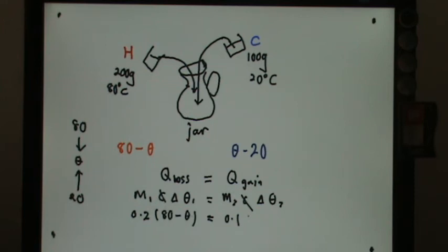I'll put in my theta minus 20. After some calculation you should be able to find out that 0.2 and 0.1 is just 2 and 1, so 160 minus 2 theta.